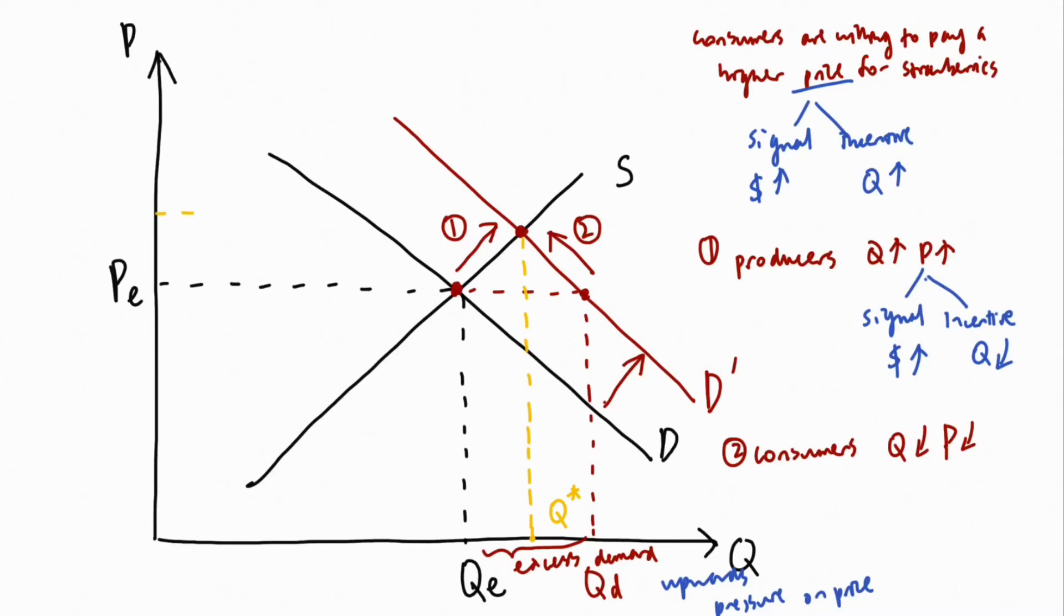This market mechanism is known as the invisible hand of the market coined by Adam Smith that illustrates the signaling and incentive functions of price that reallocates resources when prices change as a result of a change in demand conditions.